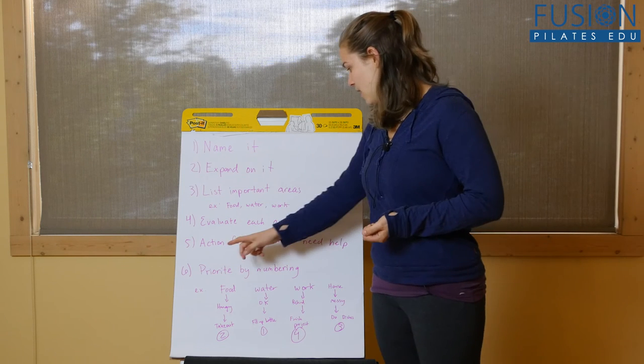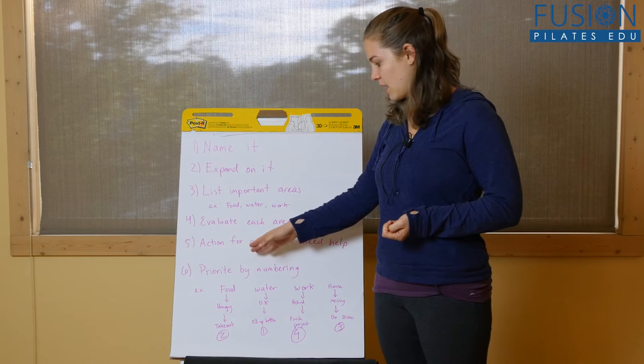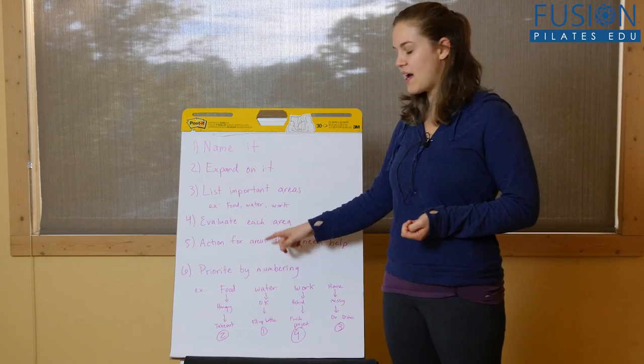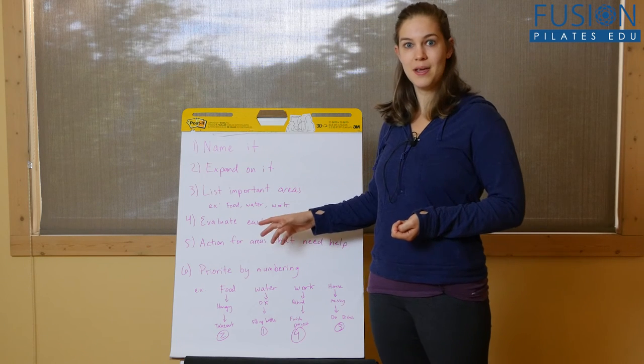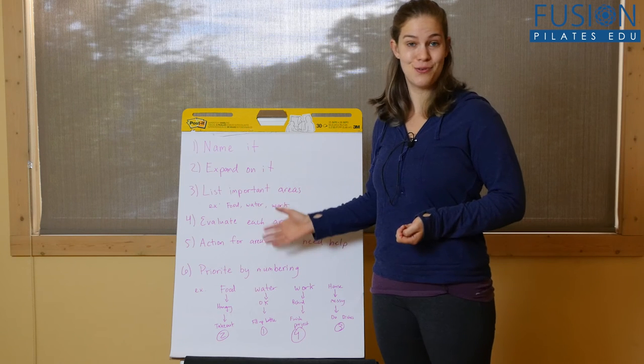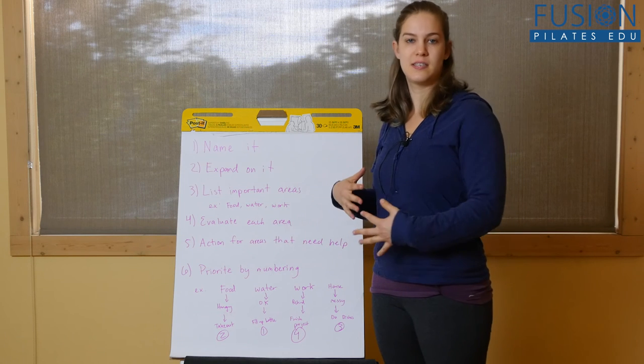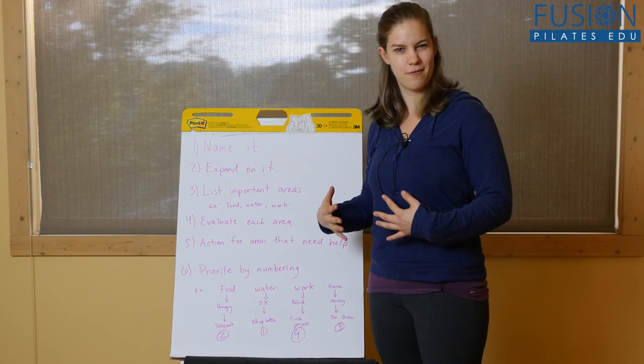Then for the areas that need help, you pick one action item. This does not mean that you fix the whole thing in two hours but that you pick a next step. Kind of like you go for the low hanging fruit if that makes sense.